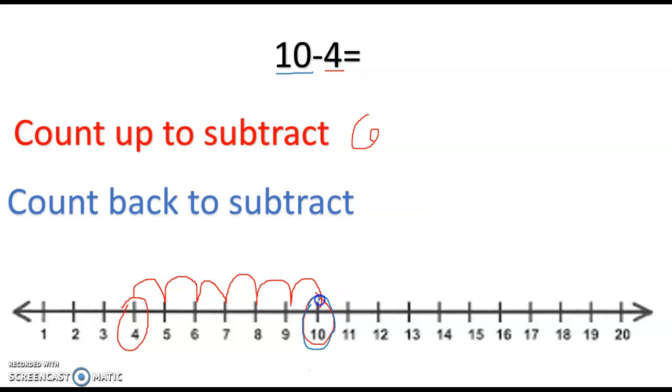So 1, 2, 3, 4 and now when you count back to subtract the number that you land on is your answer and again we got 6. So 10 minus 4 equals 6.